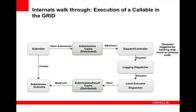Now we will walk through the execution of a callable in the grid. A client — the submitter — submits a callable in a submission. The callable gets stored in the submission cache, and on the node where this was stored, a dispatch controller will present this submission to a dispatcher chain. Finally, a local executor dispatcher will be responsible to run the callable and produce the result, then store that result in the submissions result cache. From the submissions result cache, an event will be generated which will trigger the client to know that the result is available in the submission outcome.